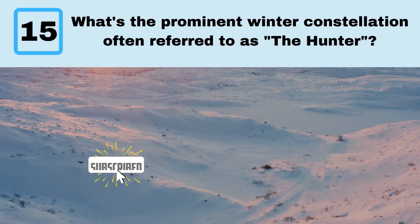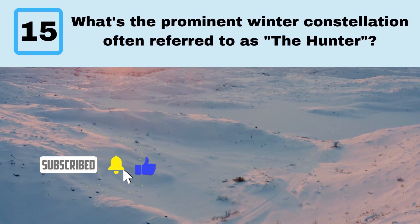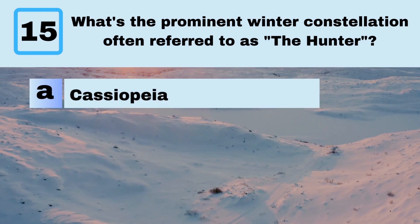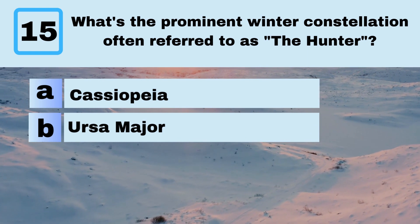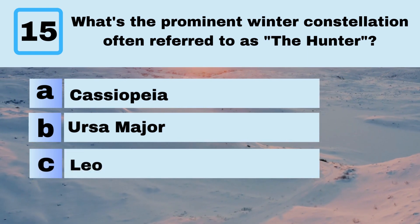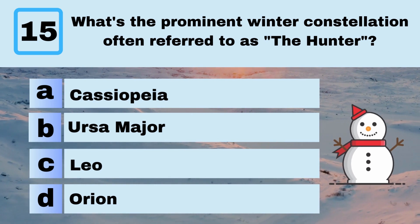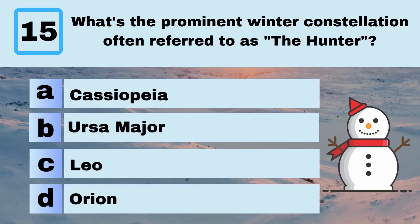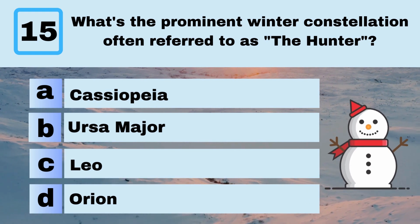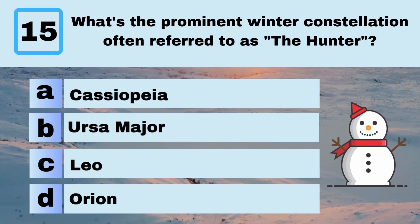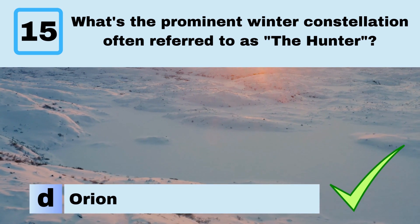Question 15. What's the prominent winter constellation often referred to as The Hunter? A. Cassiopeia. B. Ursa Major. C. Leo. D. Orion. Answer: D. Orion.